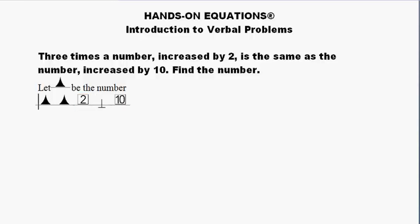At this point, by inspection, we can see that the pawn is four because four and four is eight and two is ten and on this side we have ten or if the student wishes, the student can do another legal move.